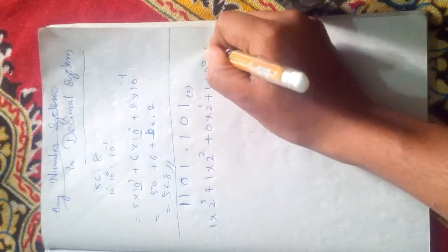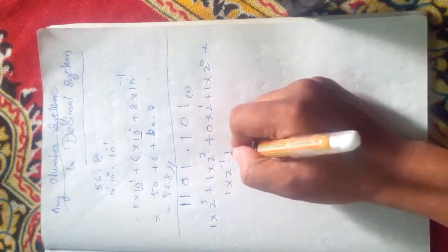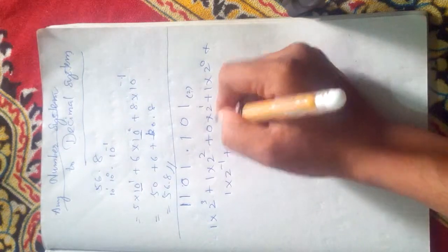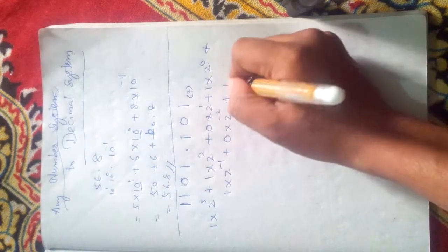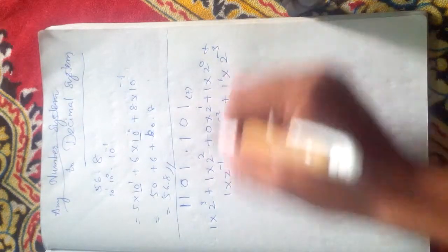plus 1 into 2 raised to minus 1 plus 0 into 2 raised to minus 2 plus 1 into 2 raised to minus 3. This is the way to write it for all systems.